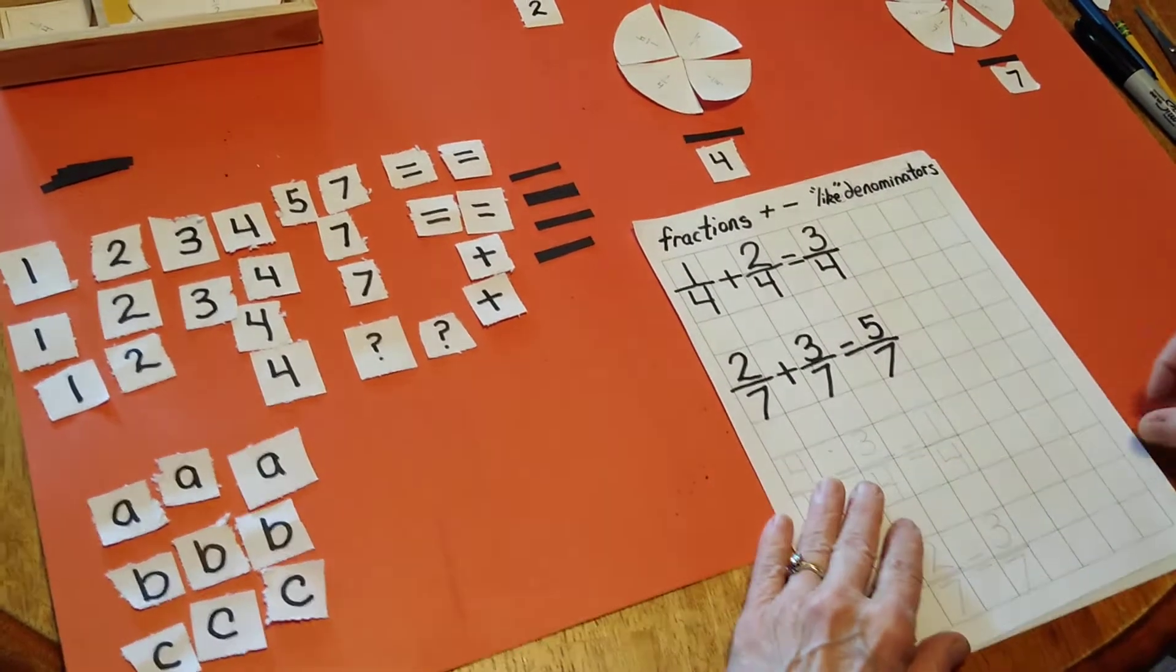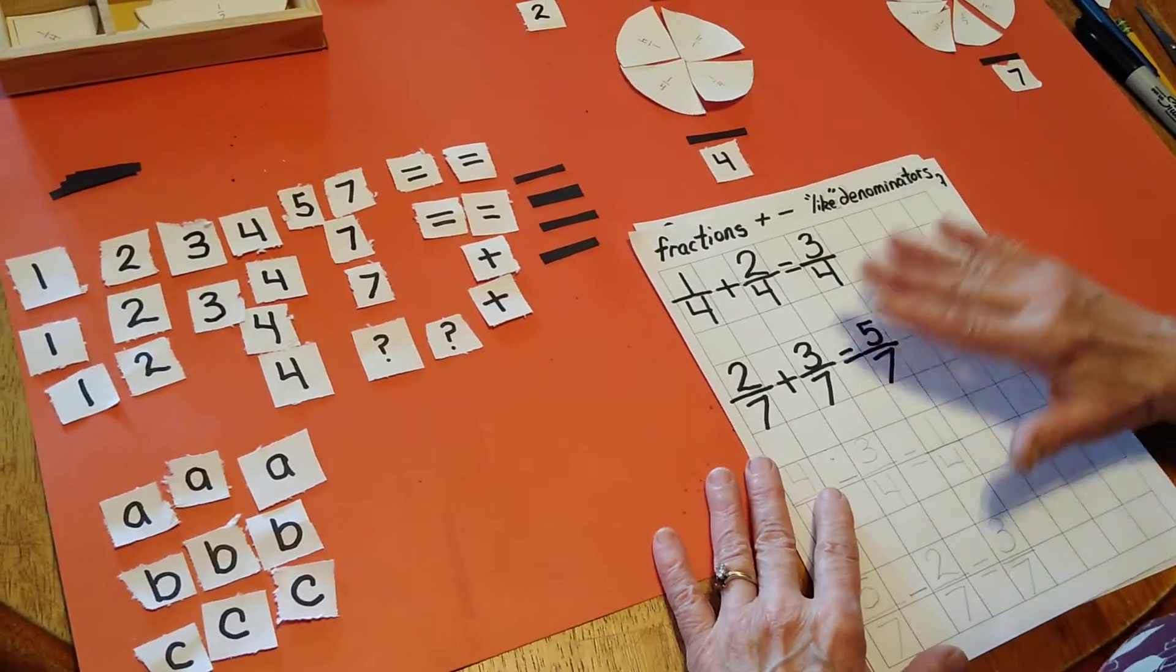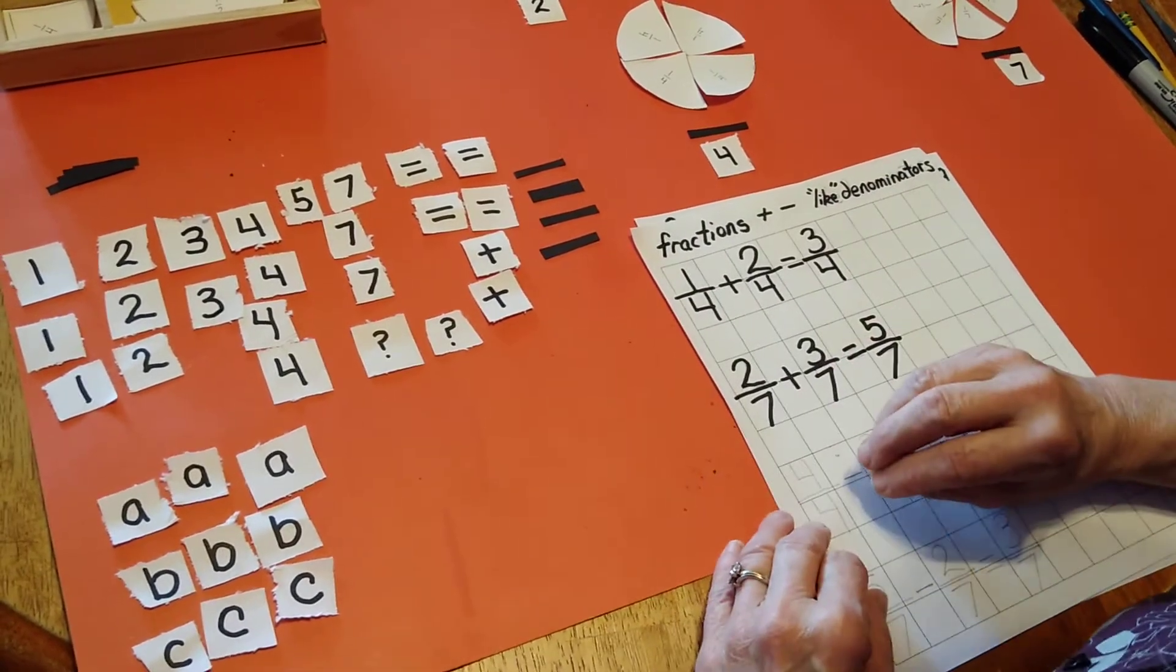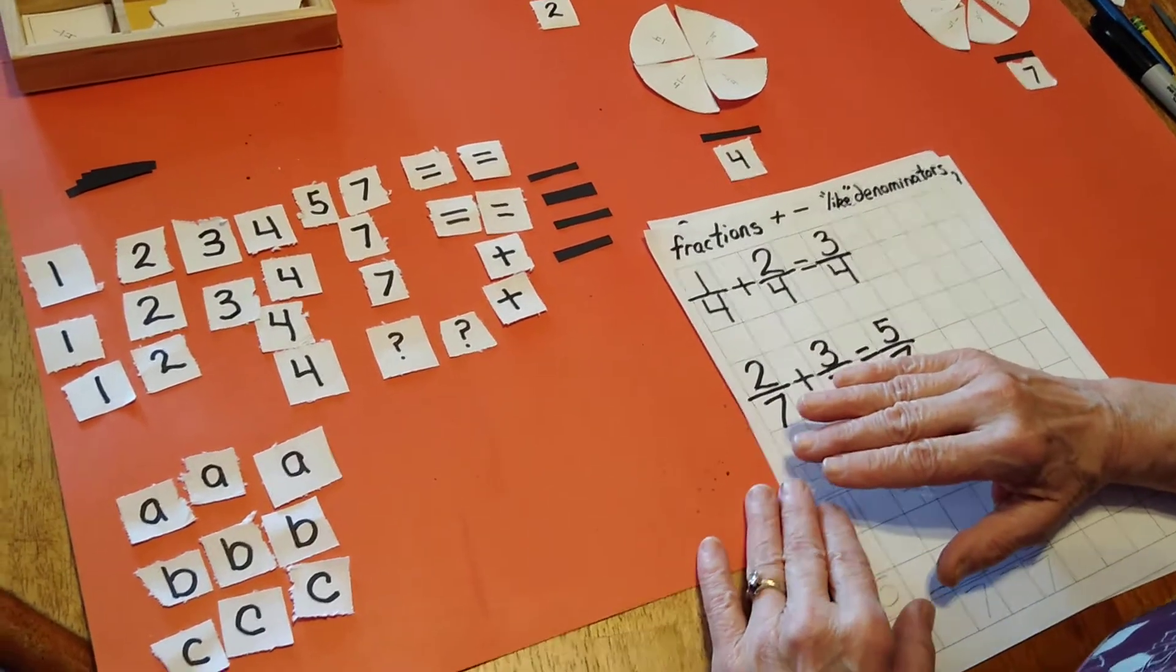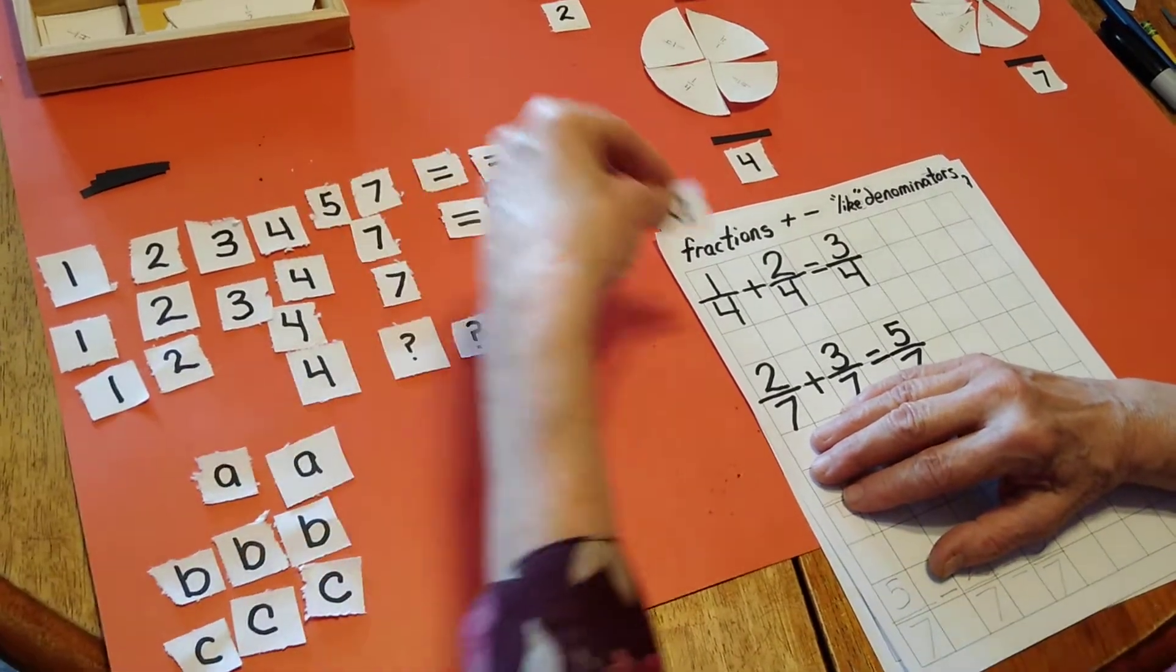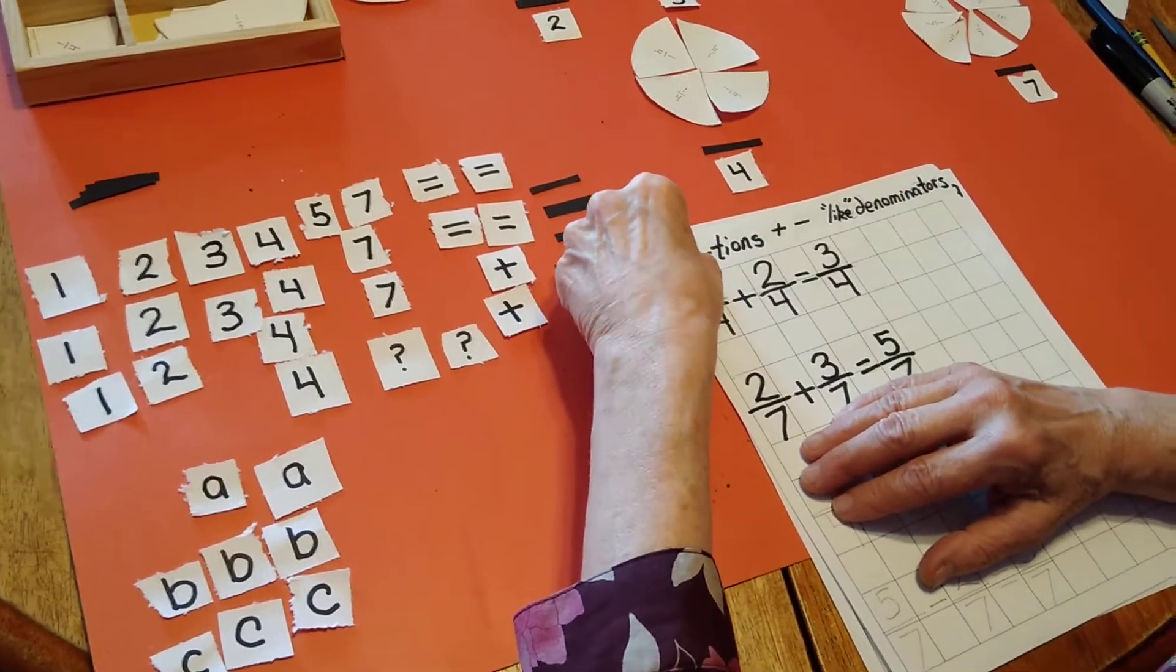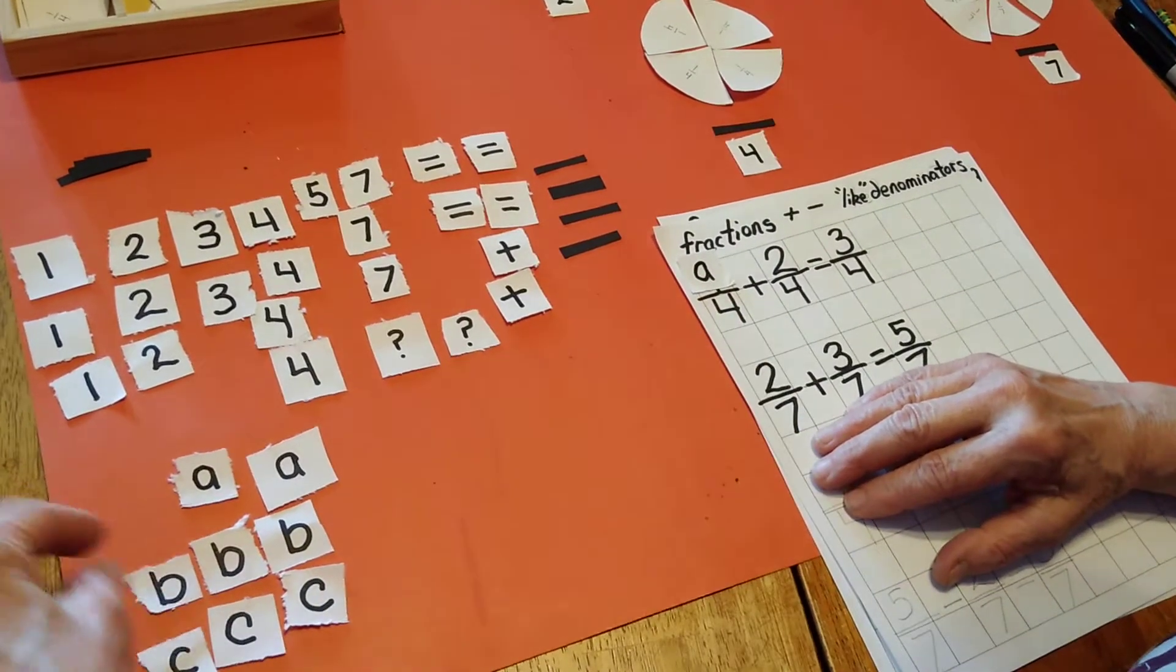When we create a pattern in algebra, we substitute symbols for the numbers so the pattern becomes more obvious. Today I'm going to use these letters here. A will be my first numerator.